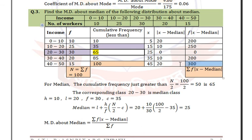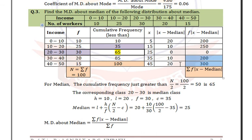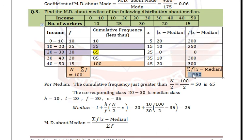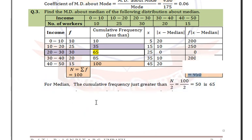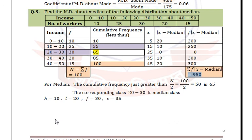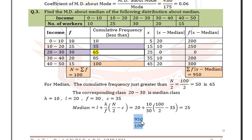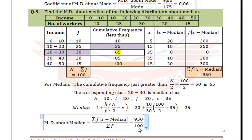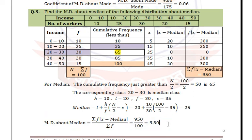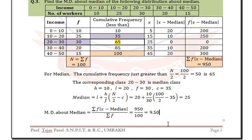Adding all values gives summation = 950. Substituting in the formula: mean deviation about median = 950/100 = 9.50. Thank you.